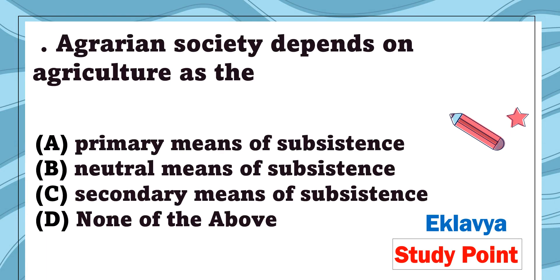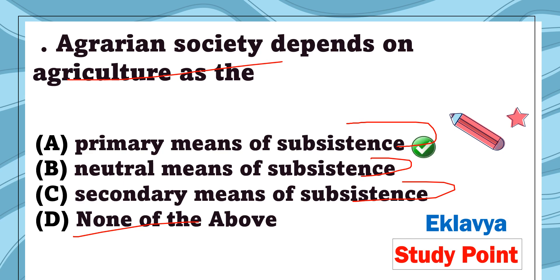Question 12: An agricultural society depends on agriculture as the — primary means of subsistence, neutral means of subsistence, secondary means of subsistence, or none of the above. If we talk about an agrarian society, they depend on the primary means of subsistence, so the correct answer is primary means of subsistence.